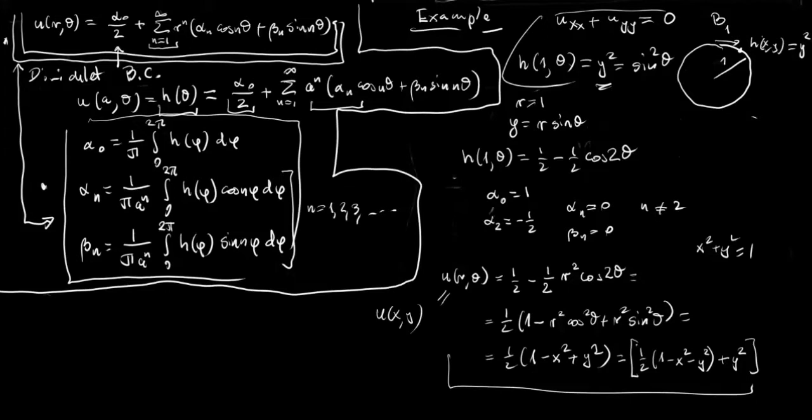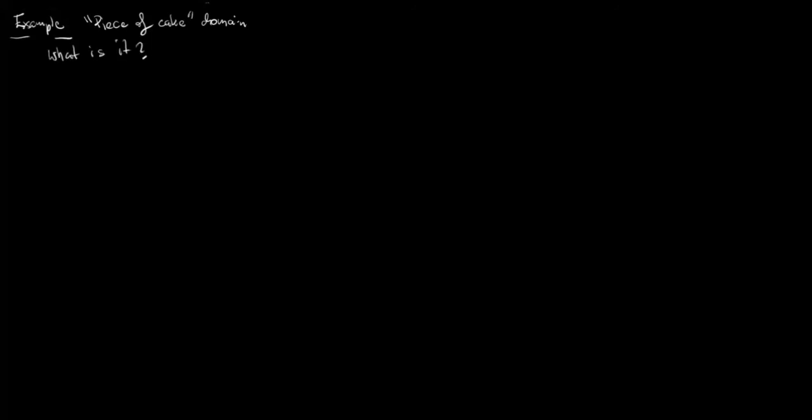So our solution u of r theta is ½ − ½r² cos²(θ) + r² sin²(θ)... Actually, u(r,θ) = ½ − ½r² cos(2θ). Going back to Cartesian coordinates, we get 1 − x² + y², which can also be written as ½(1 − x² − y²) + y², and it is very visible that on the circle x² + y² = 1 the value of this function is precisely y². So the solution to this problem is given by classical functions. This completes our example.